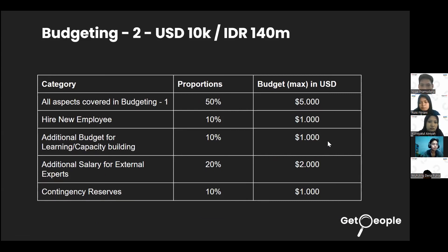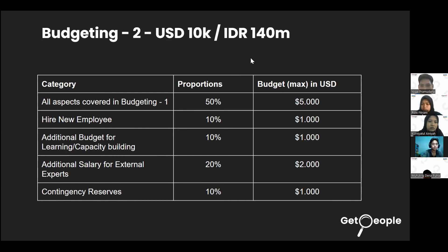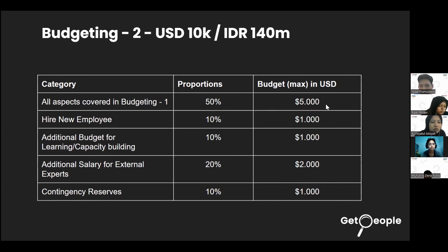If we receive the second funding option of $10,000, we plan to hire a new employee to assist with research on app development, allocating $1,000 for that. We also add budget for learning and capacity building, as we believe the most valuable investment is in our team's skills. A third allocation covers salary for external specialist freelancers to help with specific areas outside our expertise. The last item is a contingency reserve for unforeseen expenses.